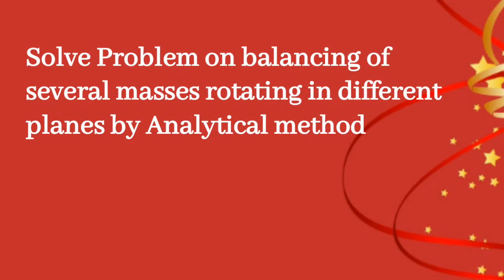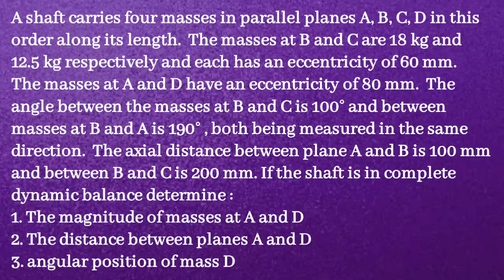Solve the problem on balancing of several masses rotating in different planes by the analytical method. A shaft carries 4 masses in parallel planes A, B, C, and D in this order along its length. The masses at B and C are 18 kg and 12.5 kg respectively, each with an eccentricity of 60 mm. The angle between masses at B and C is 100 degrees, and between masses B and A is 190 degrees, both measured in the same direction.